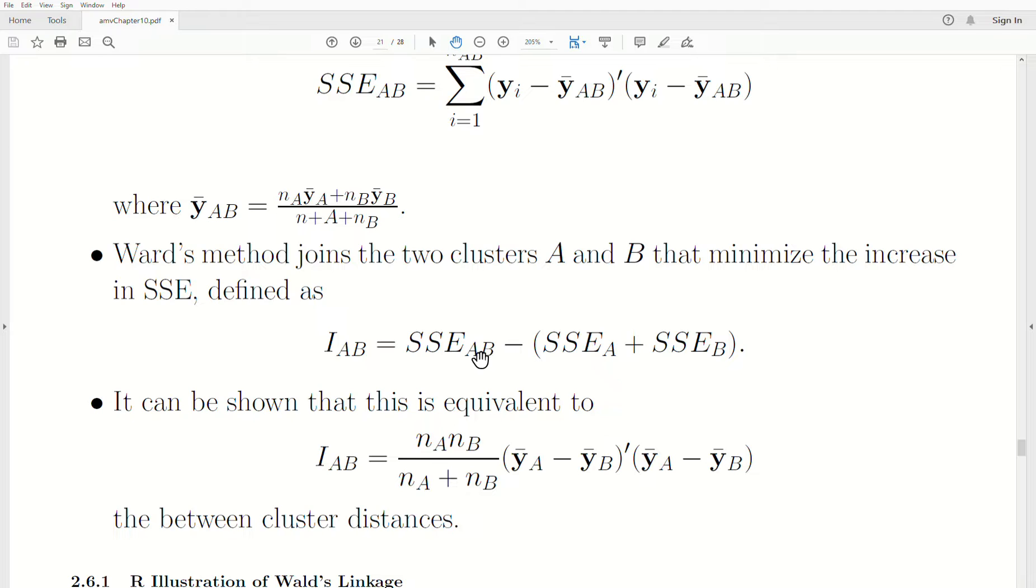Now, this is how I visualize it, but it can be shown that it's a weighted between clusters distance. You can show that I_AB is actually equal to this.